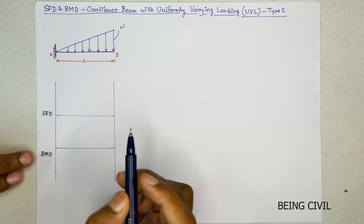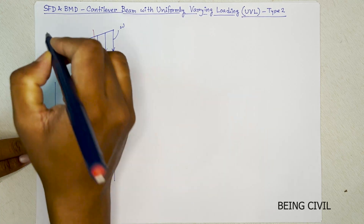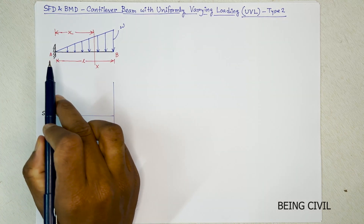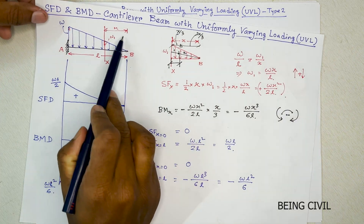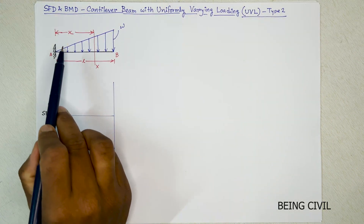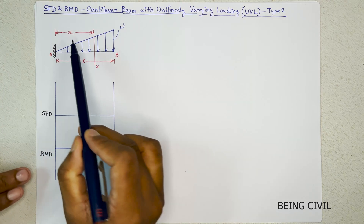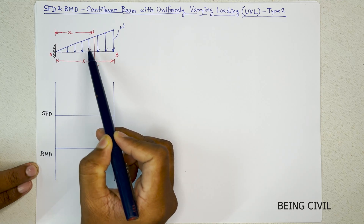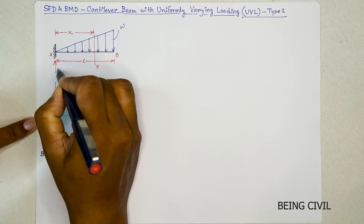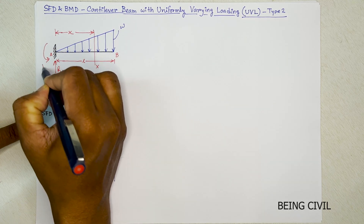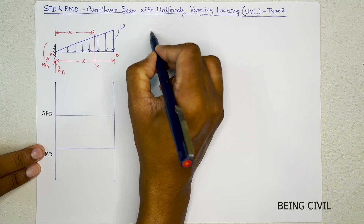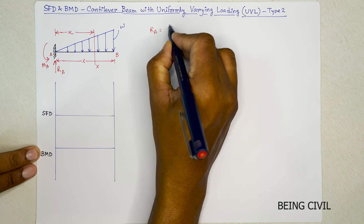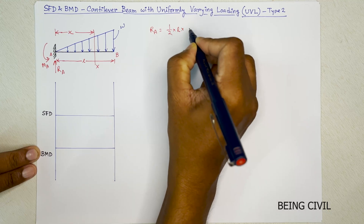Take a section at a distance x from the fixed end. In the previous video we took the section from the free end, but here we will take the section from the fixed end for simplicity of calculation, because the section will be triangular and we can calculate the load easily. We get the reaction force RA and the moment MA. RA equals the total applied load, which is the area of the triangle: half times base l times height w, giving wl/2.